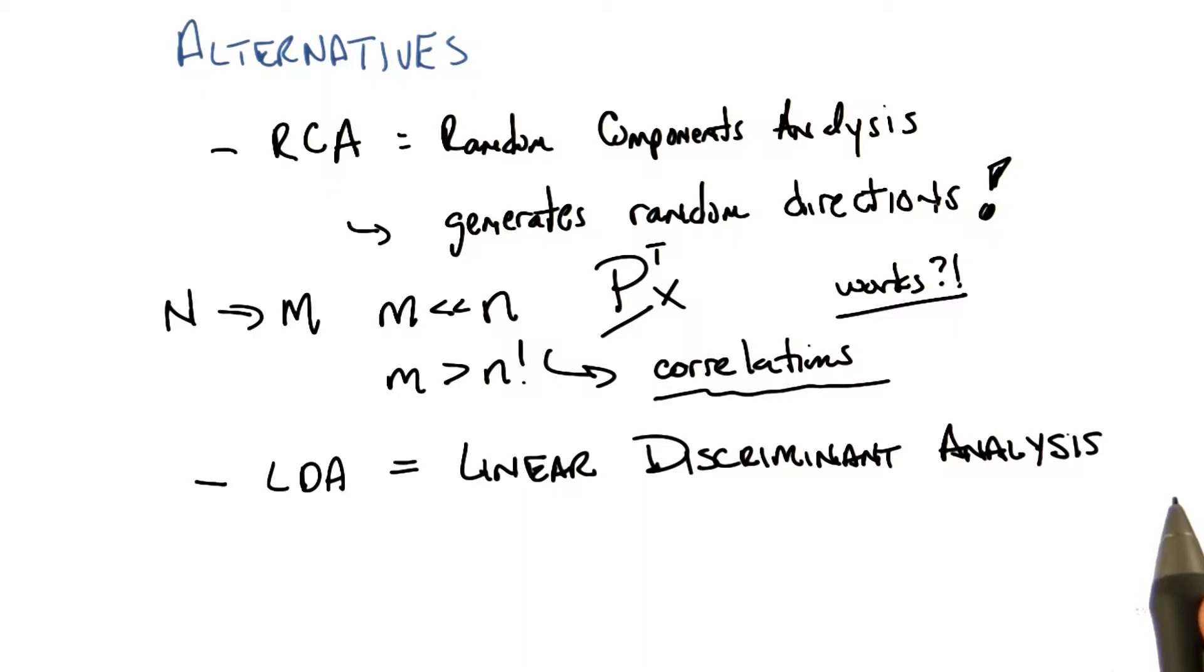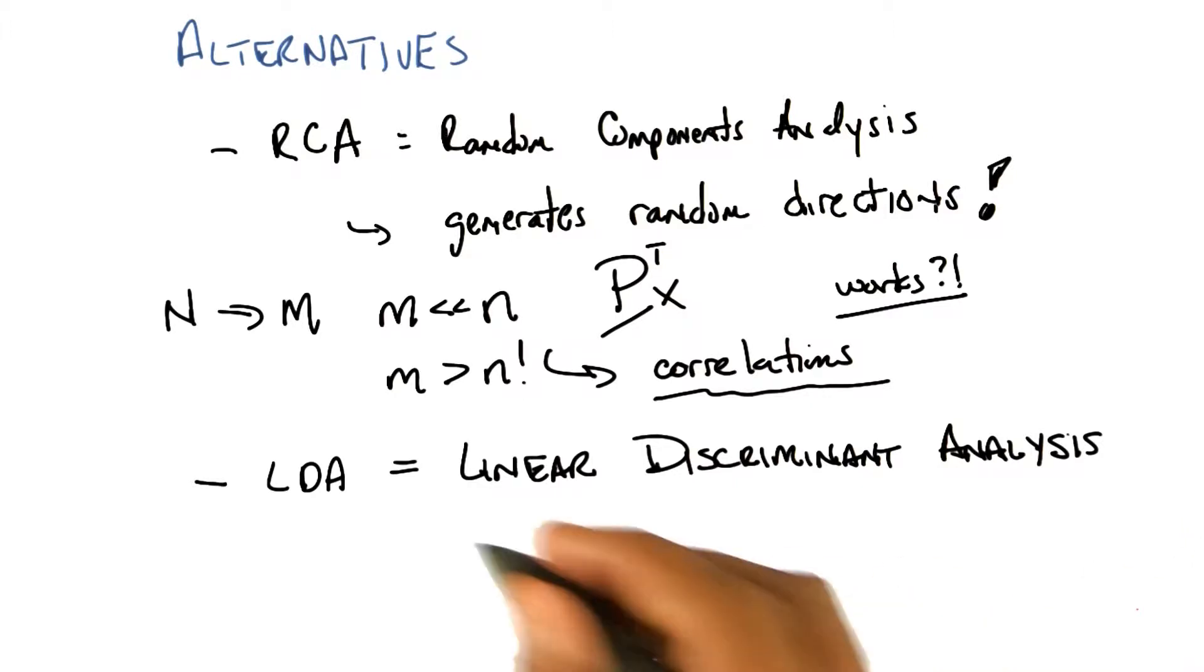Any guess on what linear discriminant analysis might do, Michael? Well, linear, so it's got a linear in it. Discriminant reminds me of, like, classification lines. Yes.